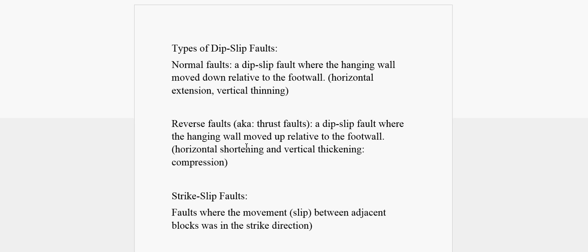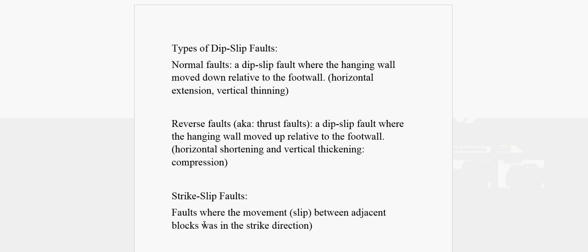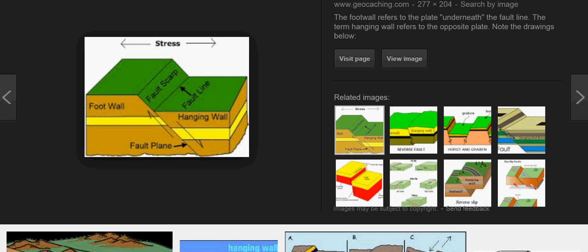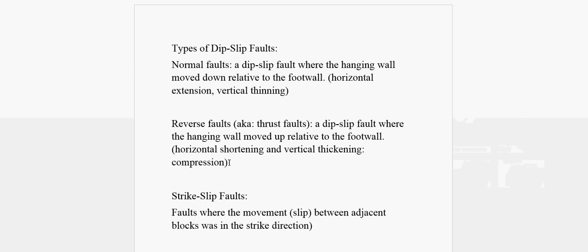For a normal fault, you can see there is horizontal extension and vertical thinning. These two terms — horizontal extension and vertical thinning — are associated with normal faults.